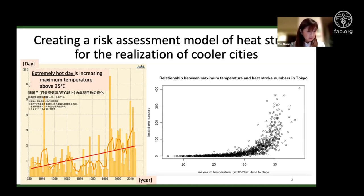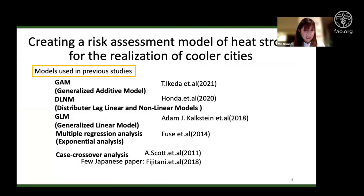Therefore, we need to think of ideas to reduce the temperature as much as possible and reduce heat stroke. To this end, I am first attempting to create a heat stroke risk model. Secondly, if we know which policies can reduce the temperature by how much, we can see how much we can reduce heat stroke — I am trying to evaluate the reduction effect of vegetation, especially urban trees.